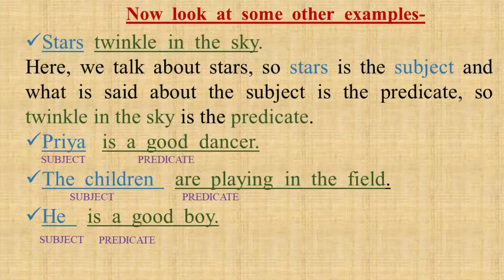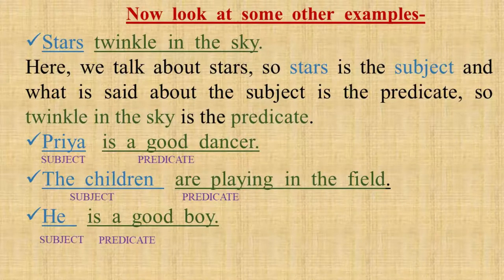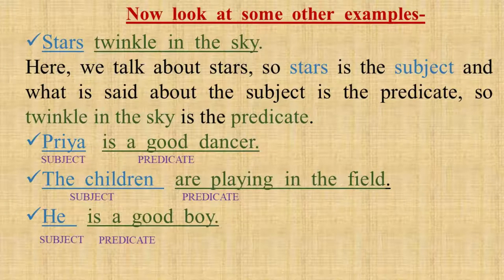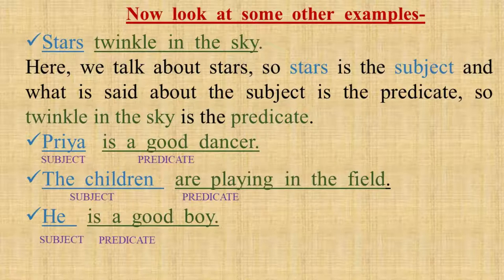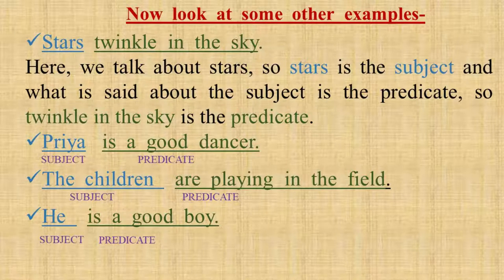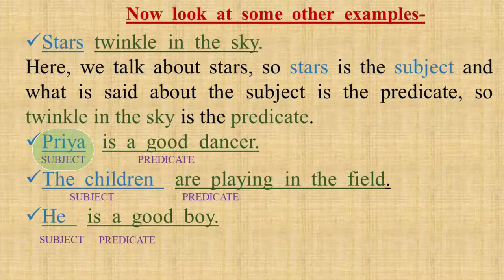Look at some other examples. Let us find out the subject and the predicate in these sentences. First sentence: 'Stars twinkle in the sky.' Here, we talk about stars. So, stars is the subject. And what are we saying about stars? That they twinkle in the sky. So, 'twinkle in the sky' is the predicate. Now, 'Priya is a good dancer.' Here, Priya is the subject, and 'is a good dancer' is the predicate.